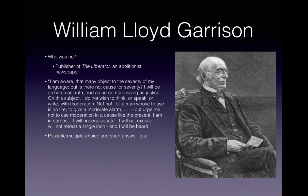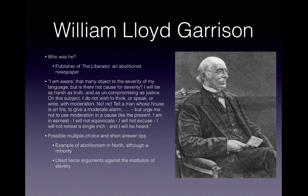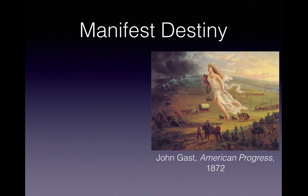'I will not equivocate, I will not excuse, I will not retreat a single inch, and I will be heard.' This is an example of abolitionism in the north, which the new curriculum specifically notes was a minority movement. This is also an example of fierce arguments against the institution of slavery. Who would agree with Garrison? Northern abolitionists. Who would not? Southern plantation owners.